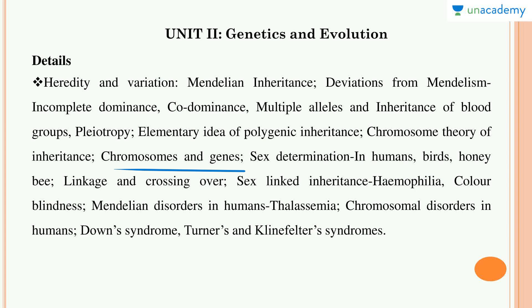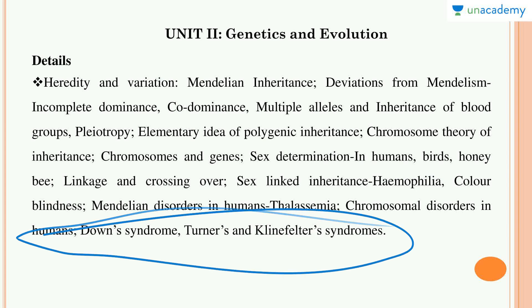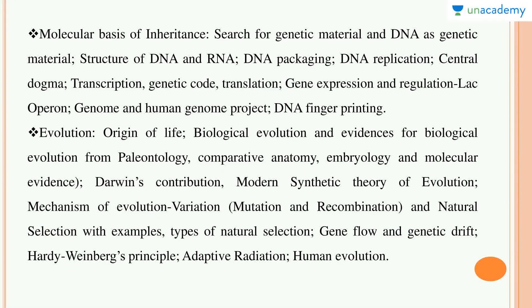Then the chromosome theory, polygenic inheritance, chromosomes and genes, sex determination in humans, birds, and honeybees, linkage, crossing over, color blindness, and Mendelian disorders in humans. Down syndrome, Turner syndrome, and Klinefelter syndrome are very very important — you must know which chromosome imbalance occurs in each and the chromosome numbers involved.